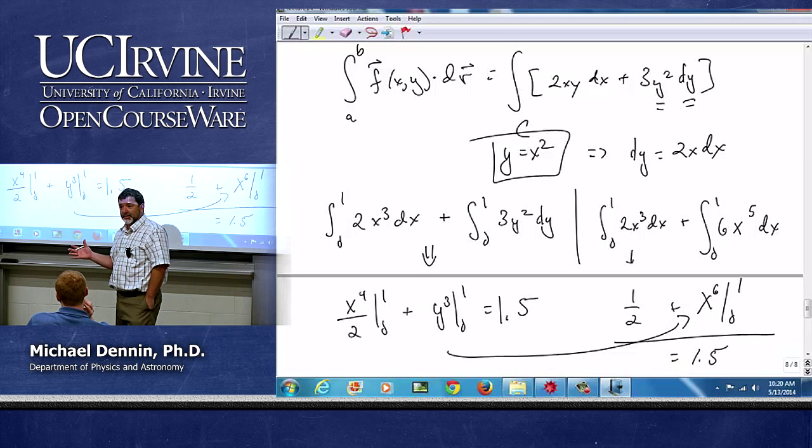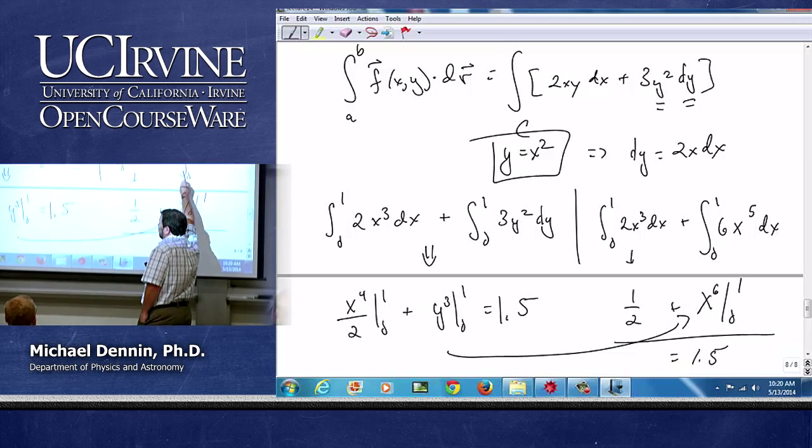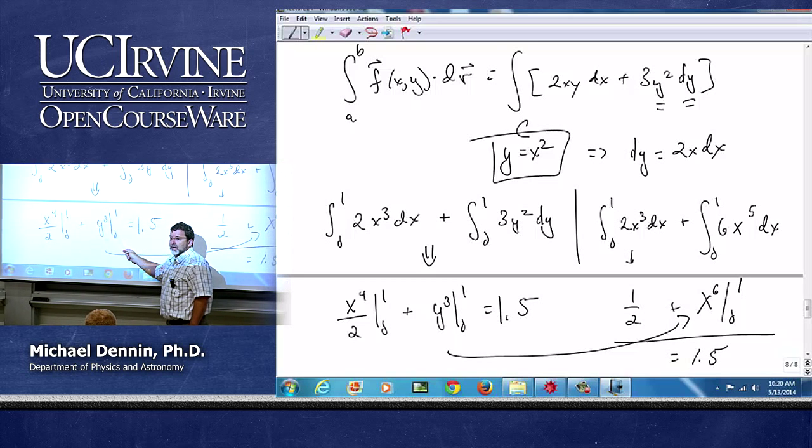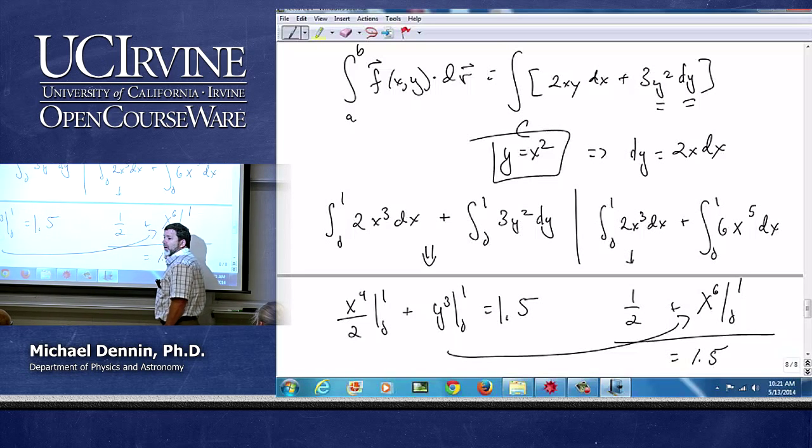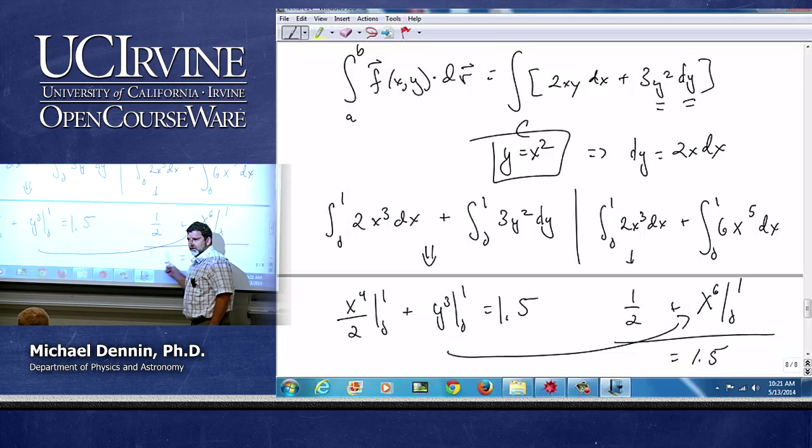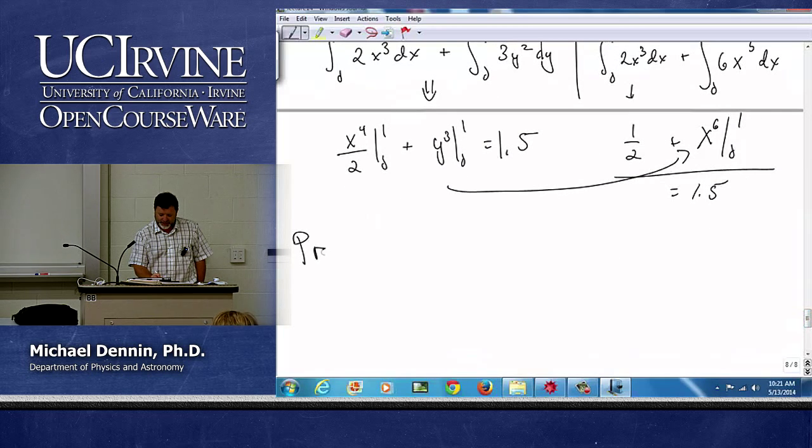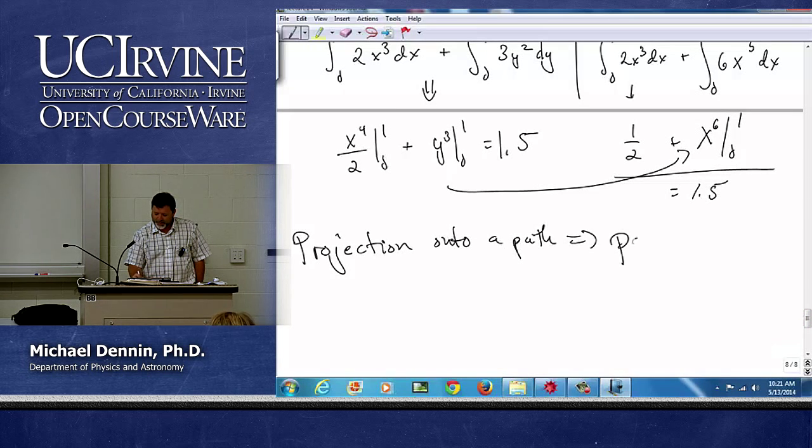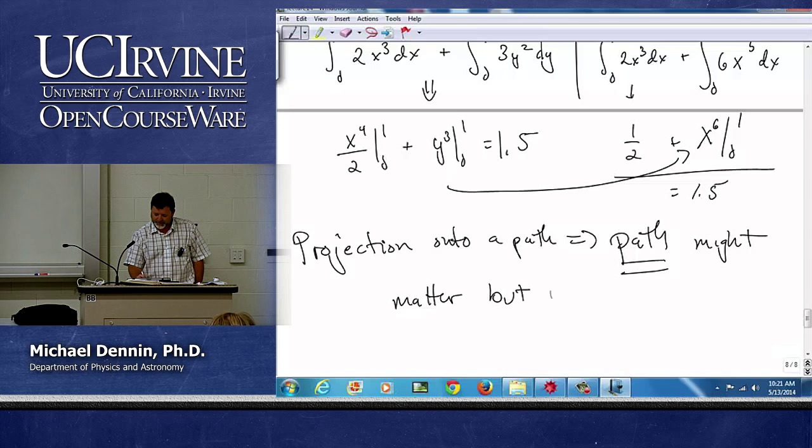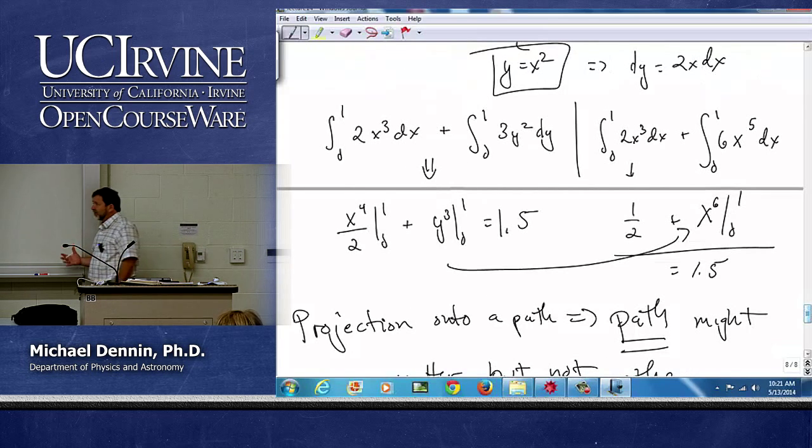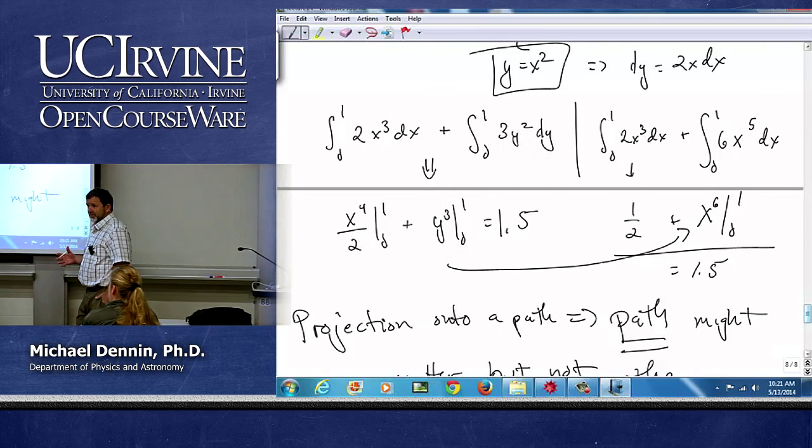So the path you take matters. But notice the parametrization of the path cannot matter. So what I did here was I used two different parametrizations of the path, and I got the same answer. So that can't matter. But the path might matter. So keep in mind that with the projection onto a path and summing, the path might matter, but not the parametrization.